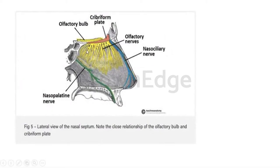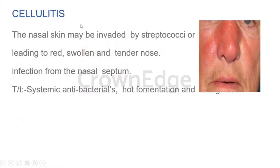This picture shows the cribriform plate with olfactory nerves emerging through it and the olfactory bulb giving rise to those nerves. Damage to the cribriform plate can result in structures poking through and damaging these nerves. Regarding applied anatomy of the external nose, the skin can be invaded by bacteria such as streptococci or staphylococci, causing redness, swelling, and a tender nose — a condition known as cellulitis. Sometimes it can involve the nasal septum as well. Systemic antibacterials and hot fomentation can be given to reduce the inflammation.